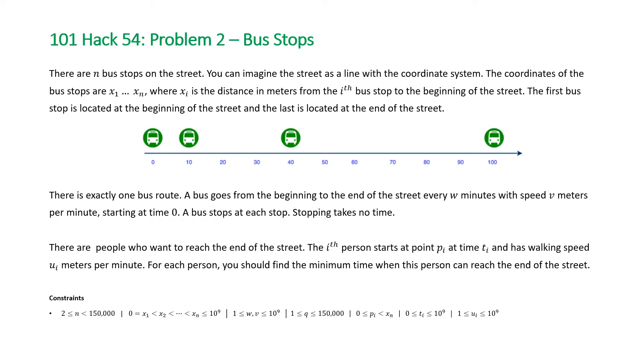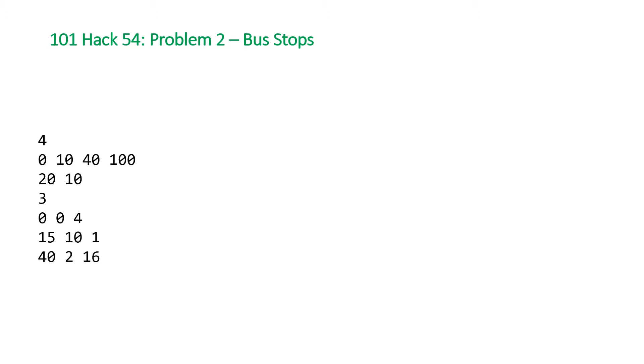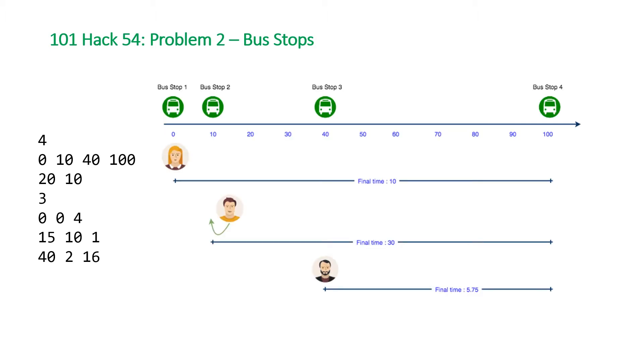Let's take a look at the example that HackerRank gave us. This is the input that we are given and HackerRank was kind enough to provide a visualization of this input. The first number of four represents the number of bus stops and the next four numbers represent the locations of those bus stops.